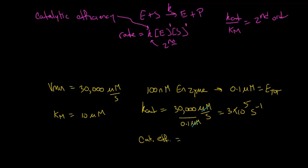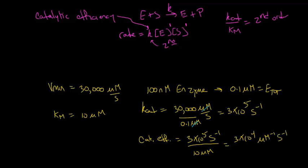The catalytic efficiency equals K_cat over K_m: 3×10⁵ per second divided by K_m of 10 micromolar. Calculating this out, we end up with 3×10⁴ per micromolar per second. This is the unit of a second-order rate constant — per concentration per time — describing the conversion of enzyme and substrate all the way to product.